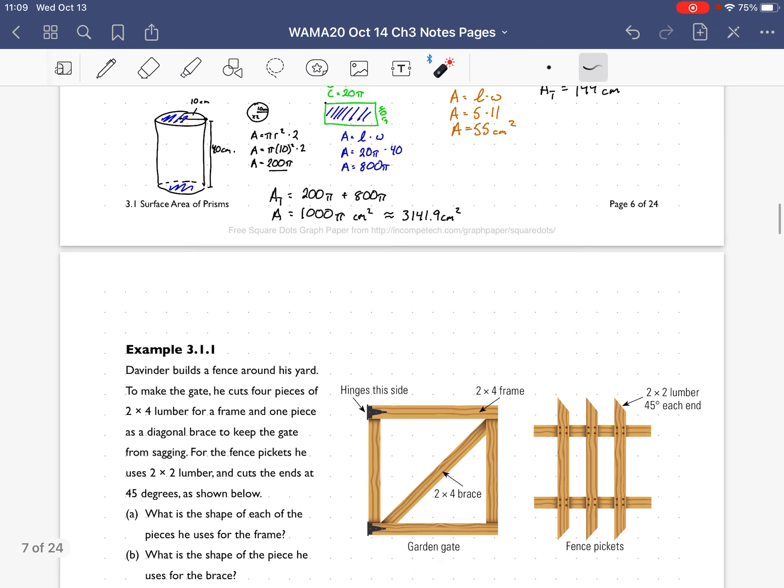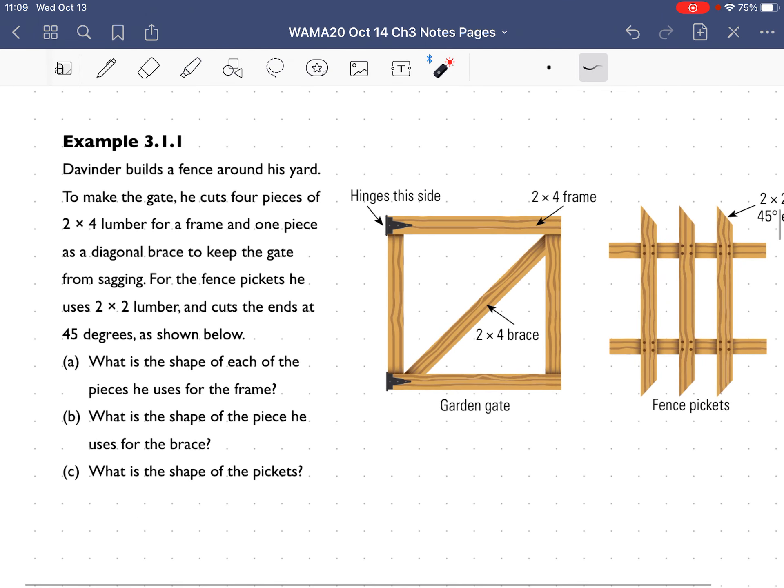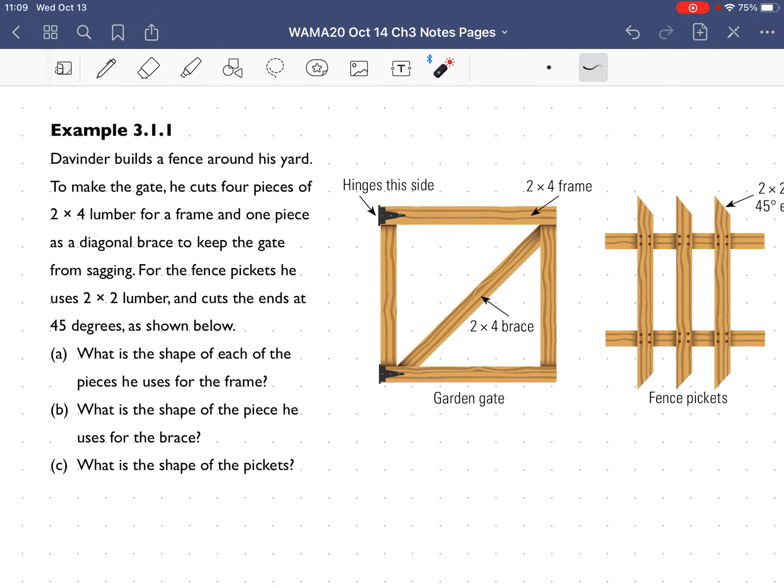Alright, let's continue on with section 3.1, the surface area of prisms. We're going to go on to the first example, Example 3.1.1. Davinder builds a fence around his yard. To make the gate, he cuts four pieces